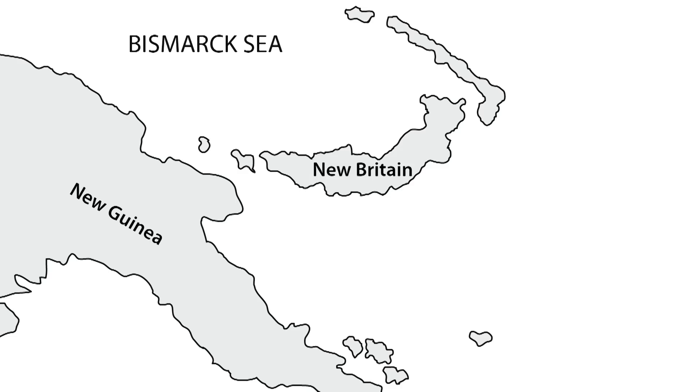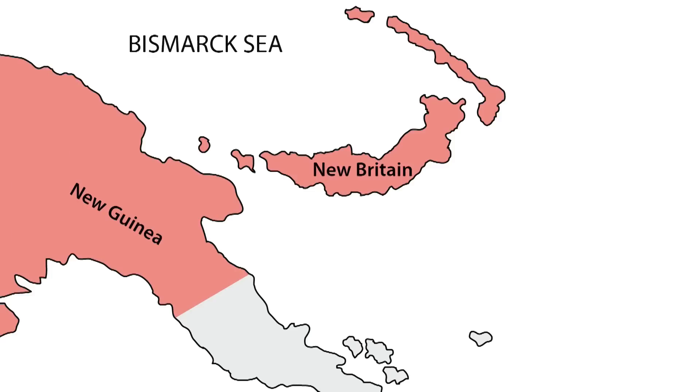The Battle of the Bismarck Sea was a battle fought in 1943 in Southeast Asia during World War II between the Japanese Navy and the U.S. Air Force. The battle took place near New Guinea. The northern part of the island, as well as the surrounding islands including New Britain, remained occupied by Japanese forces, while Allied forces had already liberated the southern part of New Guinea.